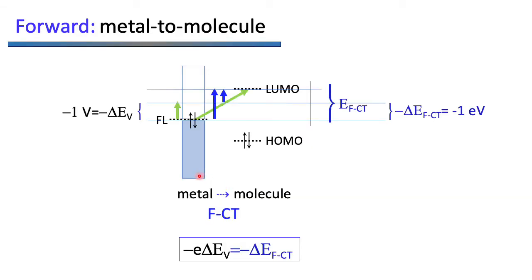The energy requirements for electron transfer are summarized in this popular scheme showing the relative energy of the continuous levels of the metal with respect to the energies of the HOMO and LUMO orbitals of the molecules. In the forward metal-to-molecule charge transfer, an electron of the Fermi level of the metal is transferred to the vacant LUMO orbital of the molecule. If the electropotential is shifted, the Fermi level rises one electron volt and the energy of the metal-to-molecule charge transfer process is reduced by the same quantity.